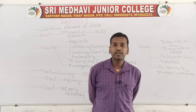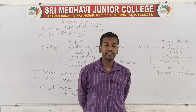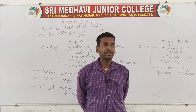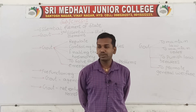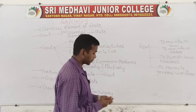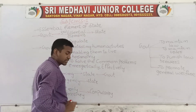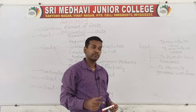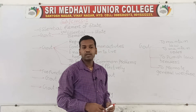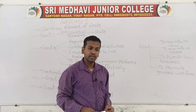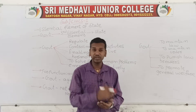Hello students, back to class. In the last classes we discussed the essential element of state - the second point, territory, which includes land, water, sea spaces, etc. Now in this topic we will study about government, which is the third important element of the state. Without government, even if a population and territory exist, we cannot call any particular area a state. Without government there is no state, and without state there is no government - they are interrelated and interdependent.